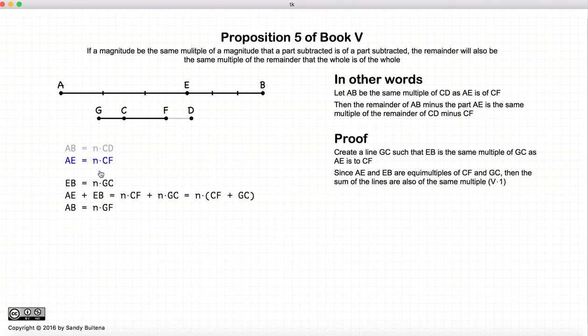Now AE and EB are equal multiples of CF and GC. So if we add them together, the result, AB, will also be the same multiple as the others of GF. So AB is going to be N times GF. This is all according to Proposition 1.